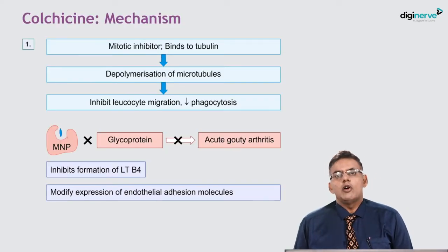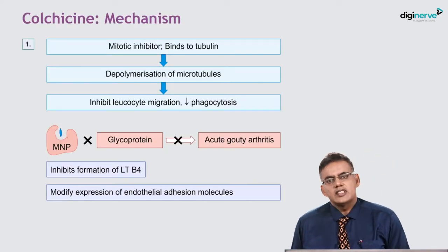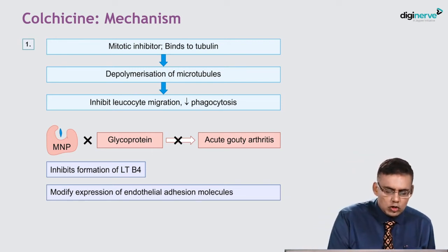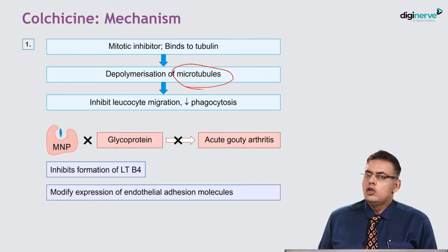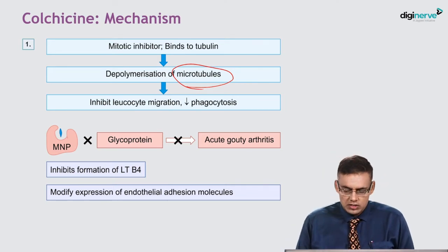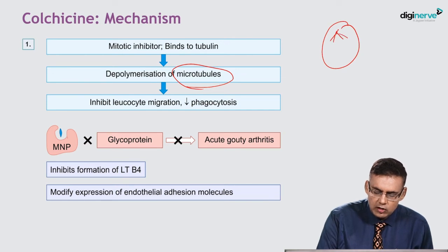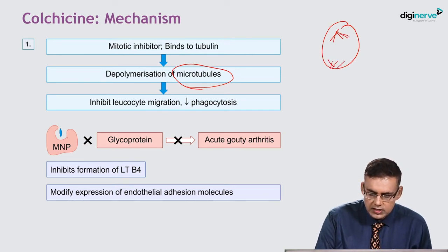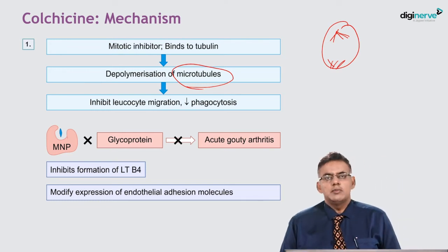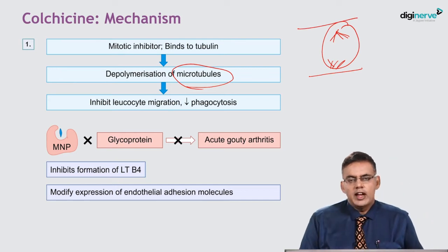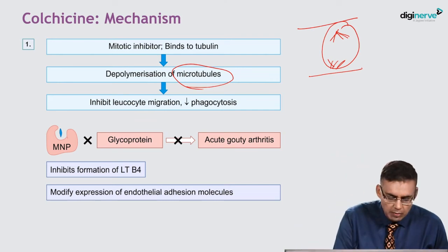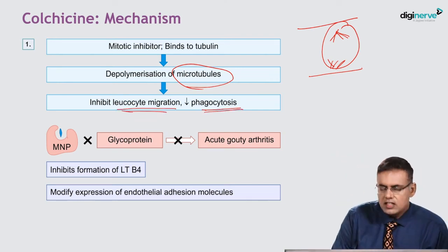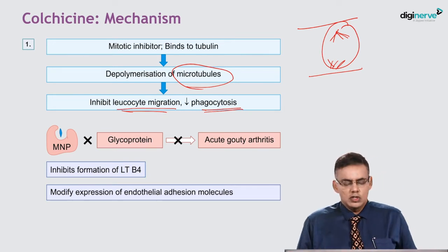Colchicine is classically called a tubulin inhibitor. Vinca alkaloids also inhibit tubulin. Colchicine is a mitotic inhibitor — it binds to tubulin and causes depolymerization of microtubules, inhibits leukocyte migration, and decreases phagocytosis. It produces mitotic arrest. Because of depolymerization of microtubules, there is a metaphase arrest. This depolymerization inhibits leukocyte migration, decreases phagocytosis, and prevents progression of inflammation.